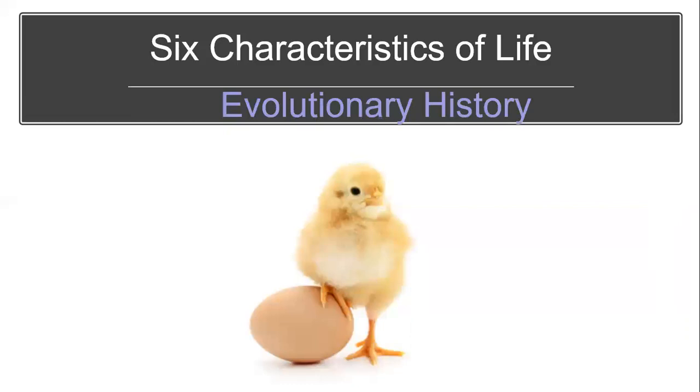Our last characteristic of life is that organisms have evolutionary history. Kind of brings us back to the chicken and the egg debate, which came first. Well, if you talk to a zoologist, someone who studies evolution of life on our planet, they'll tell you that eggs came before chickens. Chickens are certainly not the only species to reproduce with an egg.